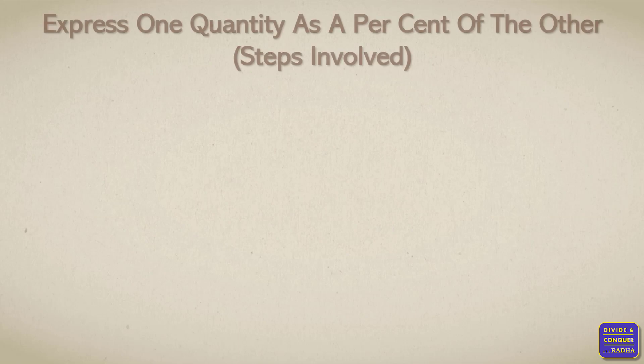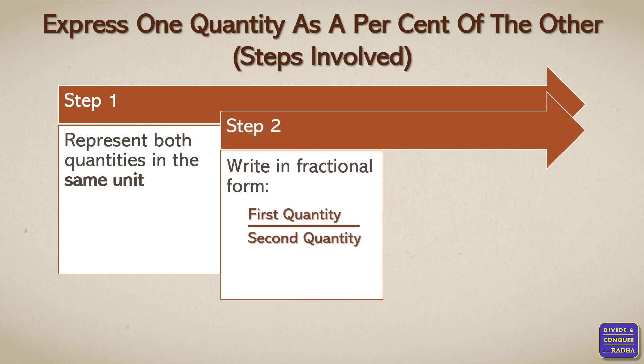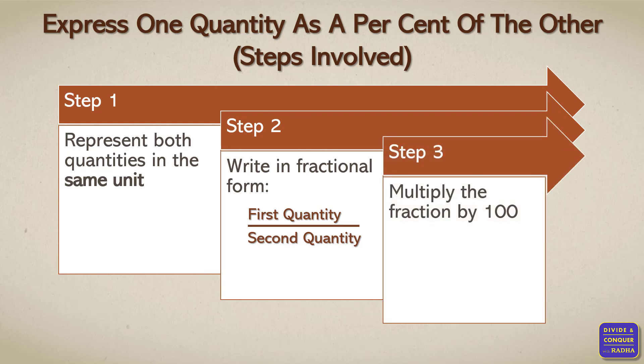This basically involves three steps. The very first step is we need to represent both the quantities in the same unit — if one quantity is in meters and the other is in centimeters, we need to express both in the same unit. Step two, we write the given quantity in fractional form: first quantity divided by second quantity. Step three, we multiply the fraction with 100. Just follow these three steps to express one quantity as a percent of the other.